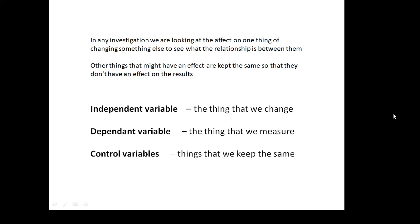In any investigation, we're looking at the effect of one thing changing one thing on something else. And we're looking for the relationship between them. What's the relationship between that and that? Other things might have an effect on it. And so what we do is we keep them the same so that they don't affect our results. There are three types of variable.